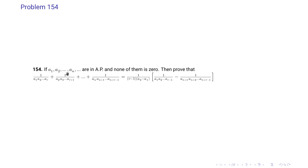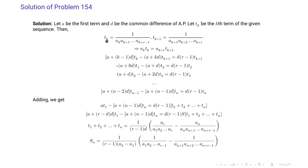Problem 154: if a1, a2, ..., an are in AP and none is zero, prove that 1/(a1·a2···a_{r+1}) + 1/(a2·a3···a_{r+1}) + ... + 1/(a_n·a_{n+1}···a_{n+r−1}) equals 1/((r−1)(a2−a1)) multiplied by [1/(a1·a2···a_{r−1}) minus 1/(a_{n+1}·a_{n+2}···a_{n+r−1})]. This is quite similar to the previous problem. Our k-th term T_k equals 1/(a_k · a_{k+1} ··· a_{k+r−1}).